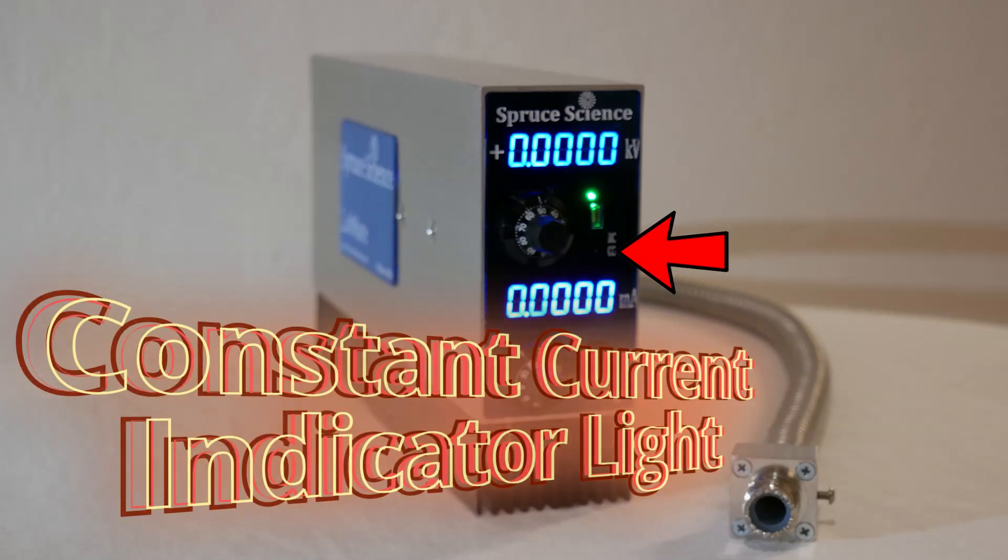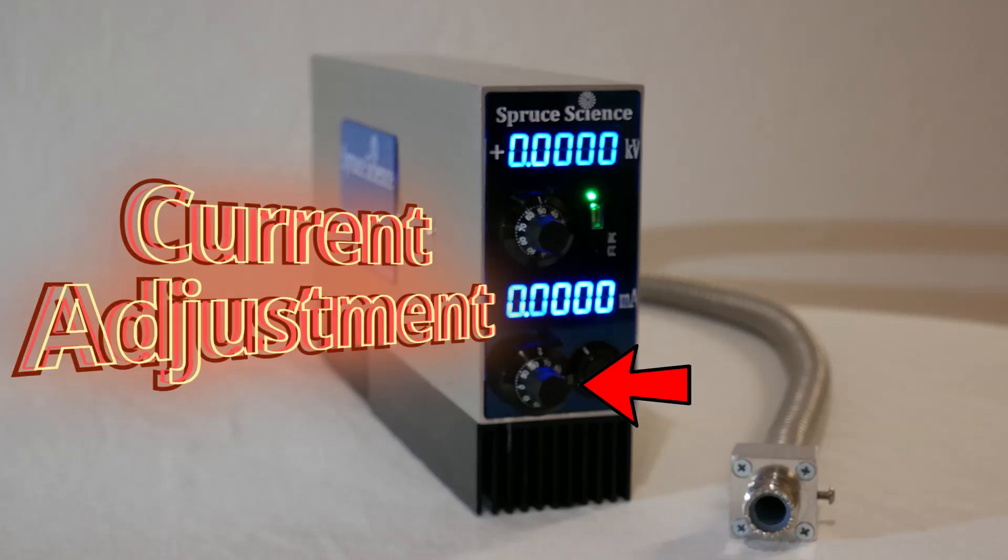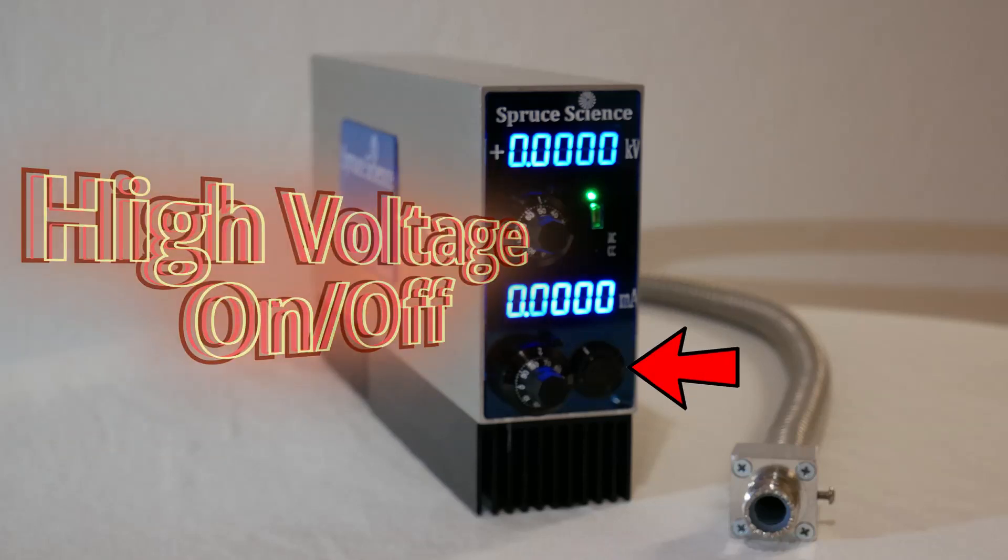Indicator light when output is in constant current mode. Current display. Current adjustment dial. High voltage on-off switch.